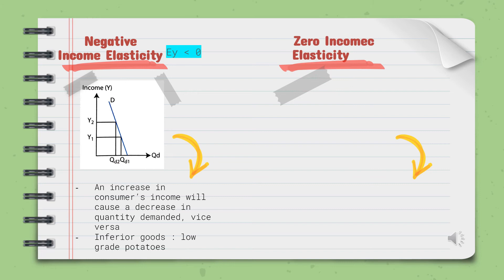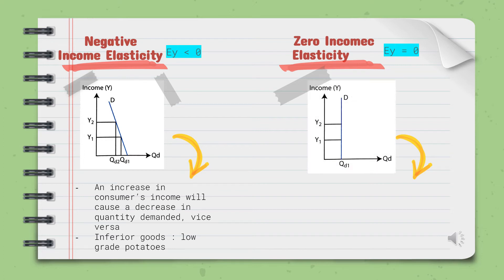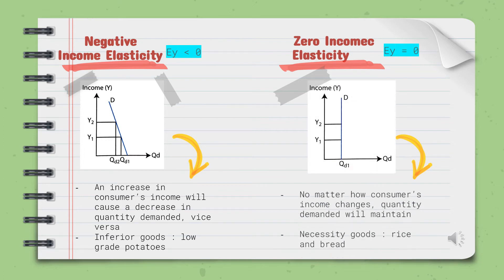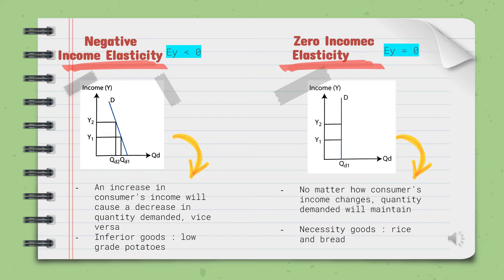Finally, for zero income elasticity, the type of goods are necessity goods such as rice and bread. An increase in income will have no effect on the quantity demanded, and it will remain unchanged. Therefore, the value is equal to 0.